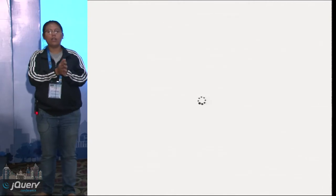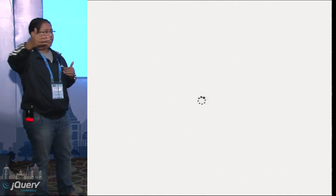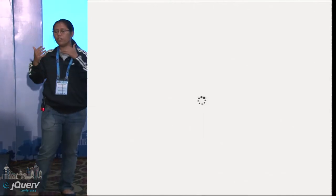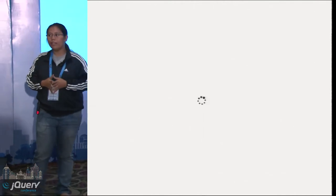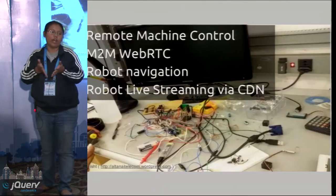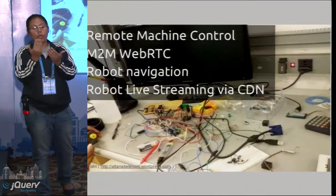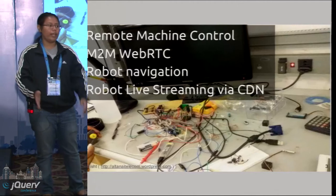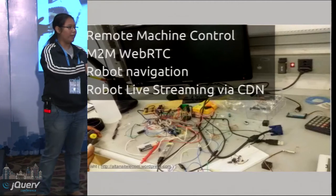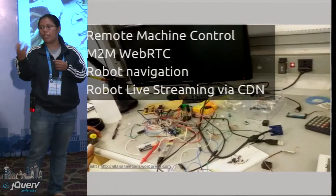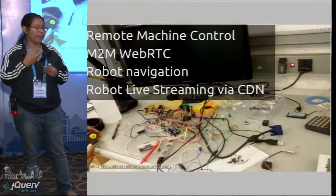The second thing we will be discussing is how to transmit media from a remote machine to our web, so that we could access it anywhere. The third thing is controlling a robot using all this — like viewing where the robot is going and controlling, navigating it based on the stream feed that we are getting.